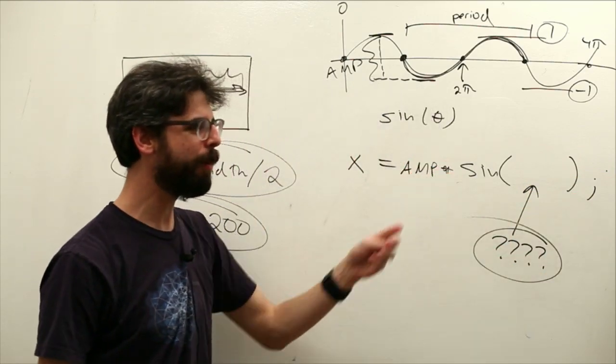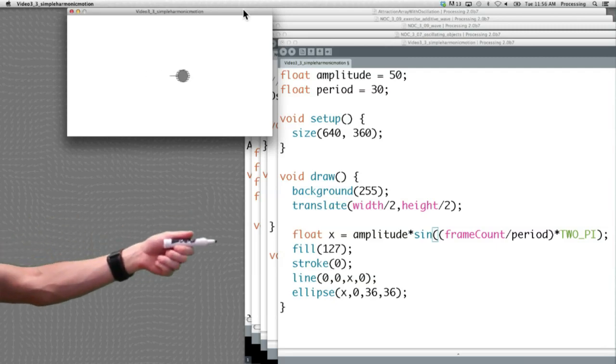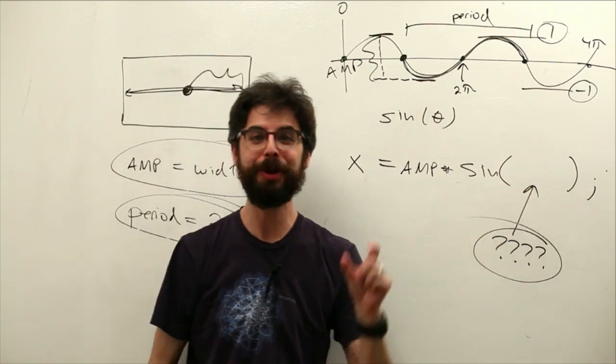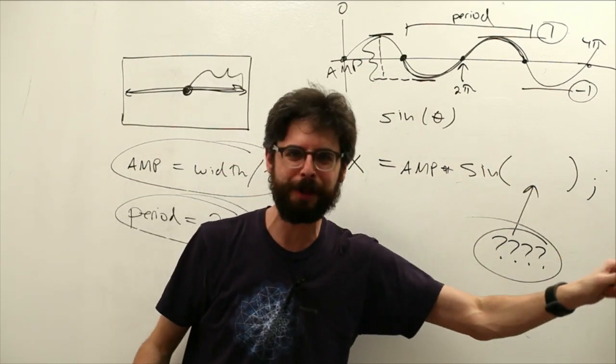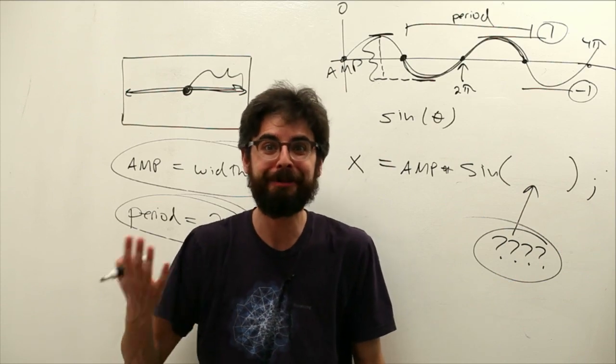So we had this, what we put in there, if we look over here really quickly is like amp, some frame count divided by period times two pi. But what we really want in there, what is that, what does that formula result in? It's a number that kind of goes up every frame, right?